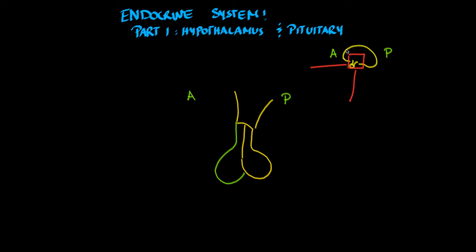Let's shift our focus to this brain right here. The hypothalamus is going to be located right around here, and it's attached through a stalk to the pituitary gland that sits inferior to it. The pituitary sits inferior to the hypothalamus, and the pituitary gland itself is divided into an anterior and a posterior section. It's very important to distinguish them because each section releases its own hormones.